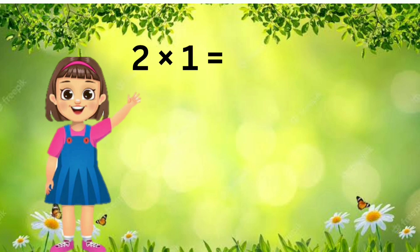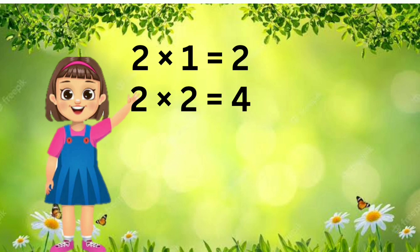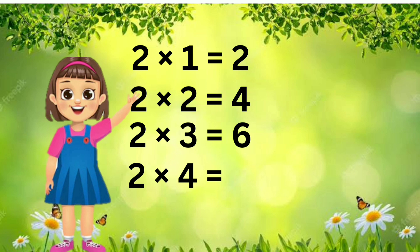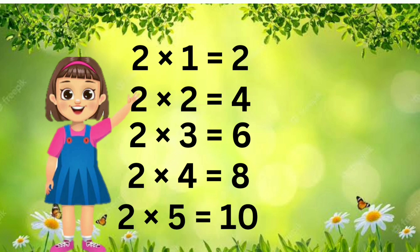Let's revise. 2 ones are 2. 2 twos are 4. 2 threes are 4. 2 fours are 8. 2 fives are 10.